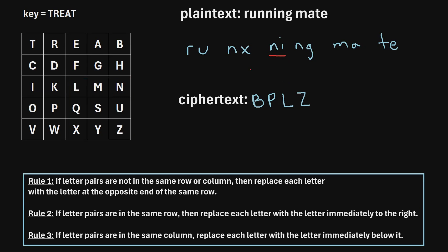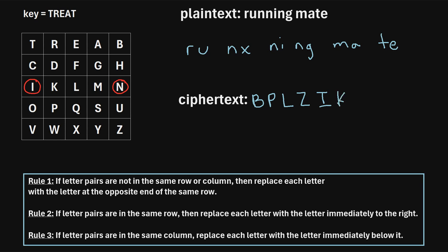Now we move on to the next letter pair N, I. These letters are in the same row, so we use rule two, which says: if the letter pairs are in the same row, replace each letter with the letter immediately to the right. For N, there's nothing to the right, so we wrap around to the other end of the row, which is I. Then I is replaced with the letter to its right, which is K. So the next ciphertext letters are I, K.